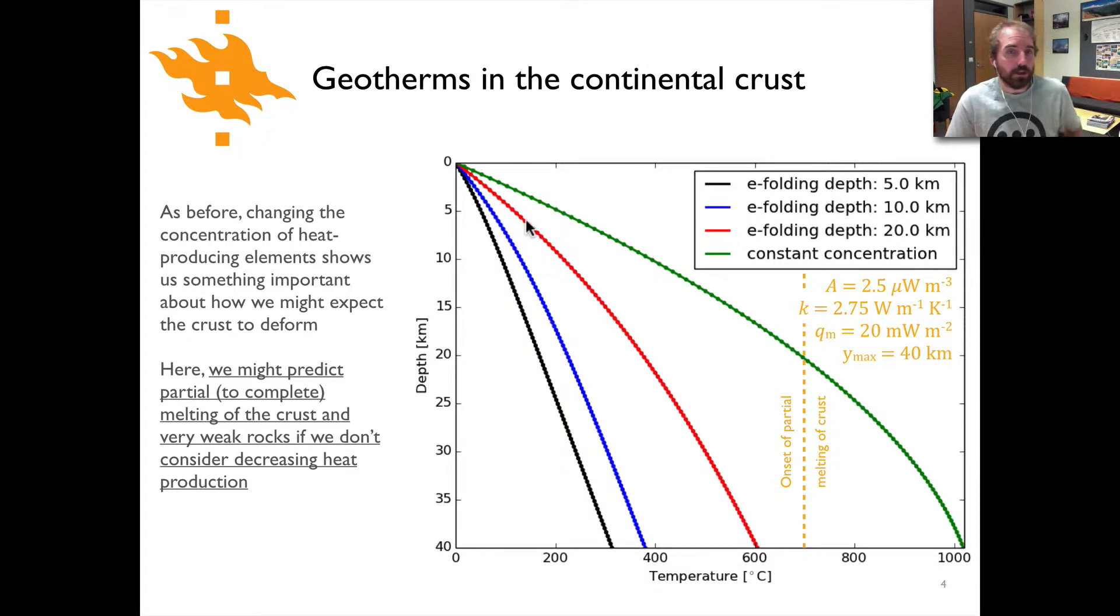This means the concentration of heat producing elements decreases more quickly in the case of the black and blue lines than in the red line, but the red line certainly has much lower heat production on average than we see for constant concentration.